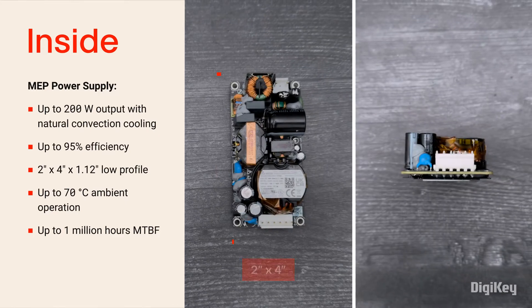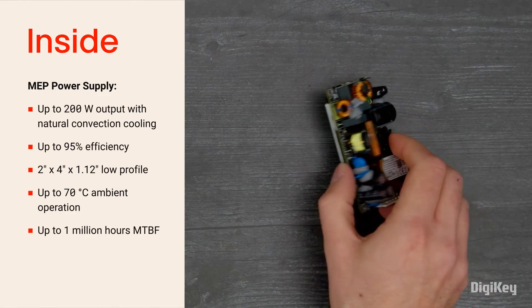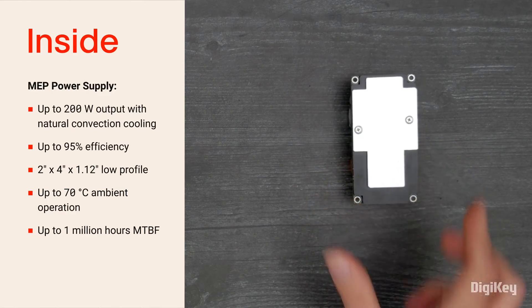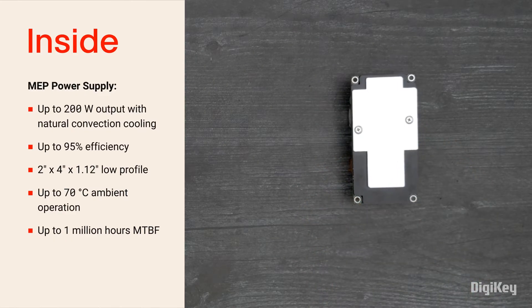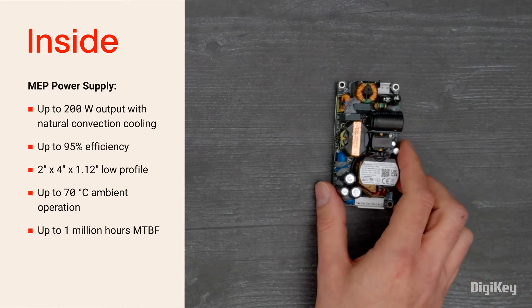The power supply has a two by four inch footprint and a 1.12 inch low profile. It's fitted with a heat sinking base plate, allowing the power supply to operate at up to 70 degrees Celsius ambient temperature with a one million hour MTBF.